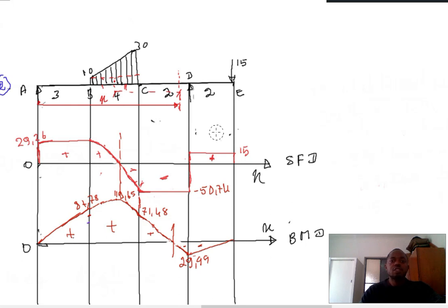As you can see on this sketch, the point of counterflexion occurs between C and D.